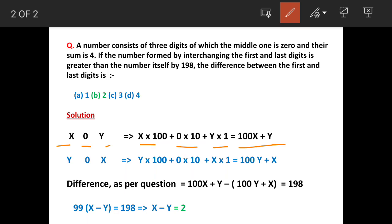0 is at 10th place and y is at unit place. So the number effectively becomes 100x plus y. And similarly, when we interchange the digits, the number is y, 0, x.